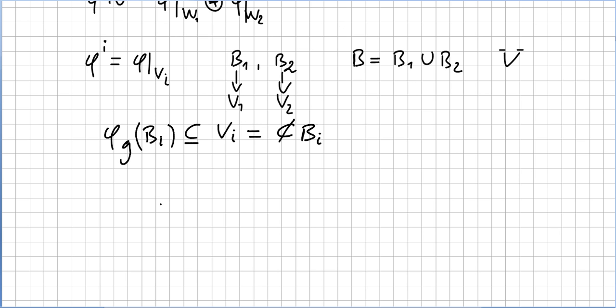We have phi g of B_i, or B1, B2, will be a subset of the vector spaces. And each one will be in the G-invariant subspace. And that is equal to the complex times the basis.